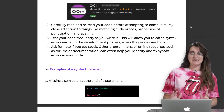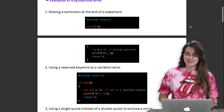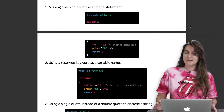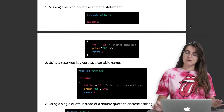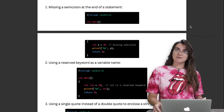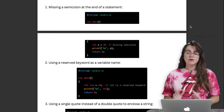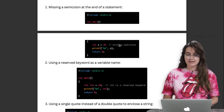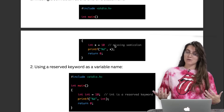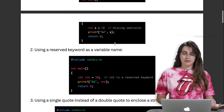Now let's see some examples of a syntactical error. The first error is missing a semicolon at the end of a statement. In C, semicolons are really important, so always check if you have one. For example, in 'int x = 10', if we're missing a semicolon we're going to fail when trying to compile our code.